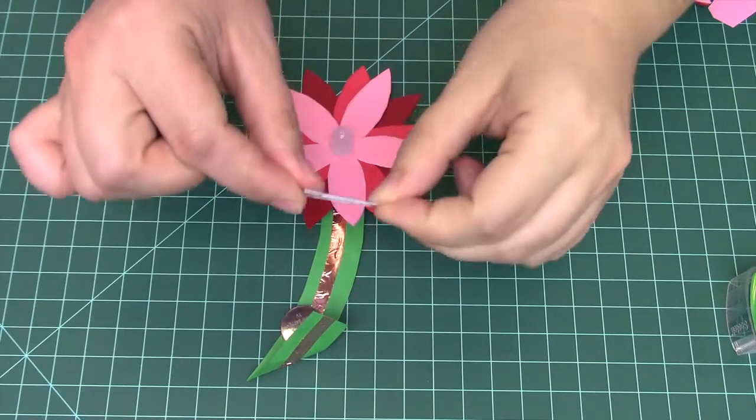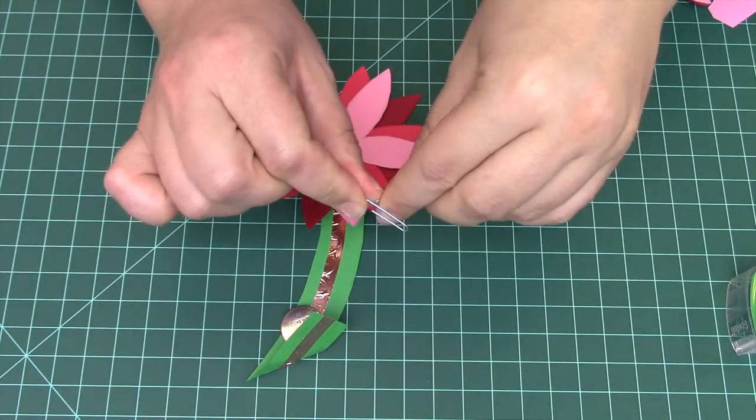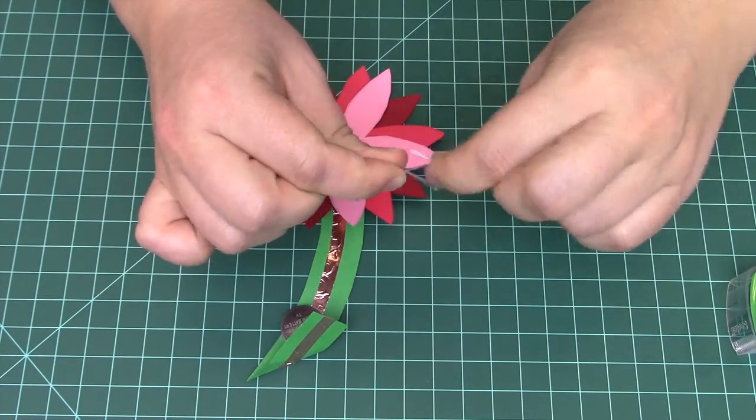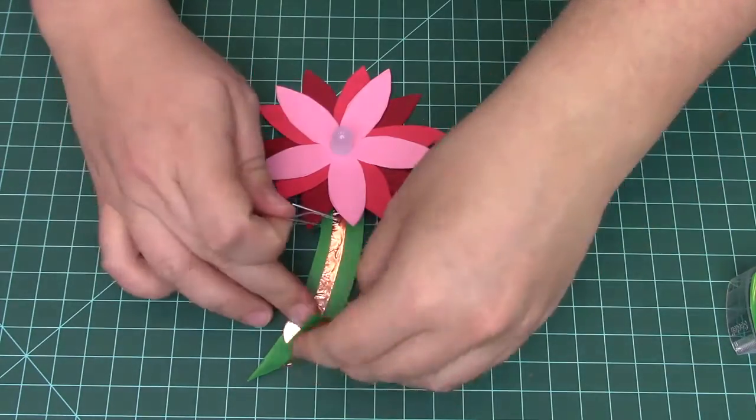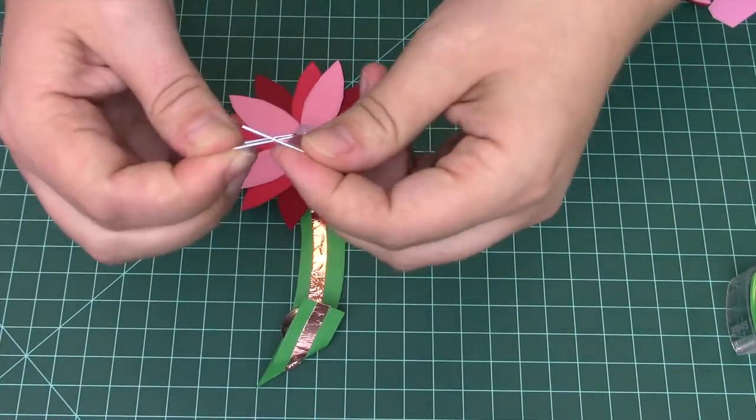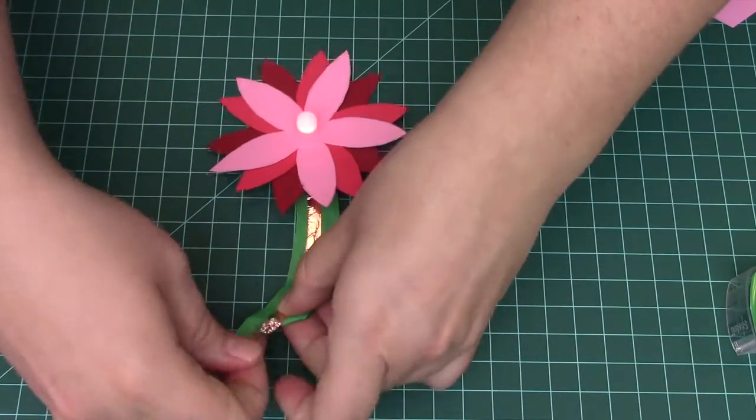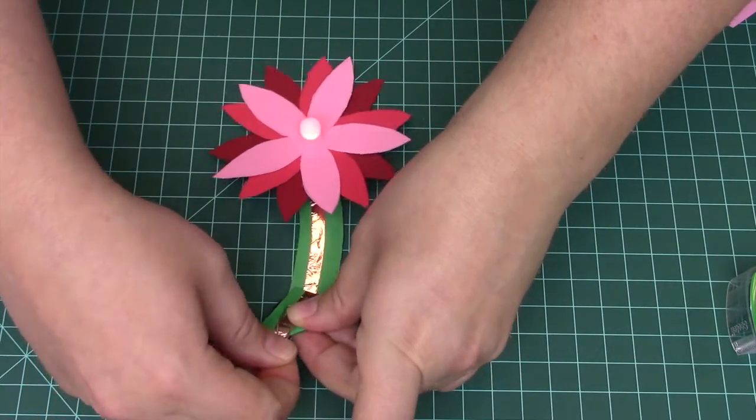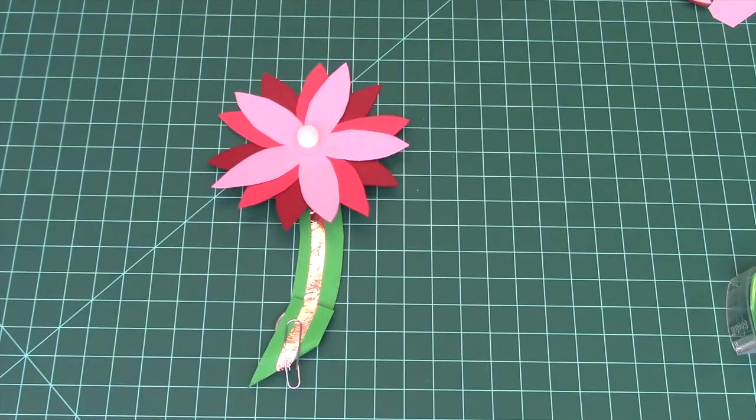And now we're ready to hook up the battery. Take your paper clip, and bend it into a triangular shape, as shown. Then fold over the bottom of your stem, and slip the paper clip over. If it's too loose, you can bend it so that it holds it a little bit tighter. If you've hooked everything up correctly, your LED will light.